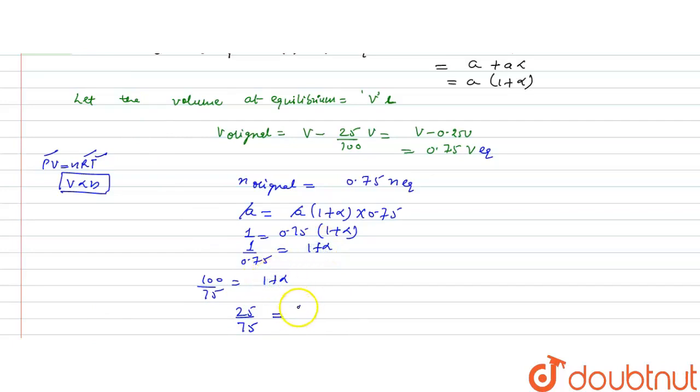So it would be alpha. It means alpha is 5 into 5 over 5 into 15, so it is 1 by 3. Alpha is calculated as 1 by 3, that is 0.33. This is the degree of dissociation, alpha is 0.33 for this.